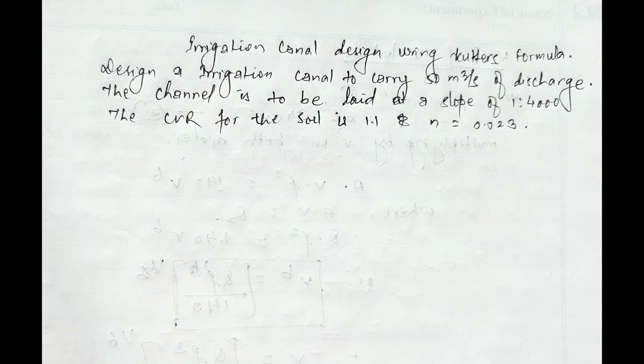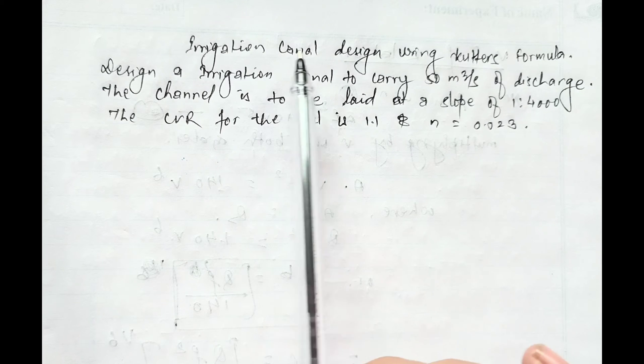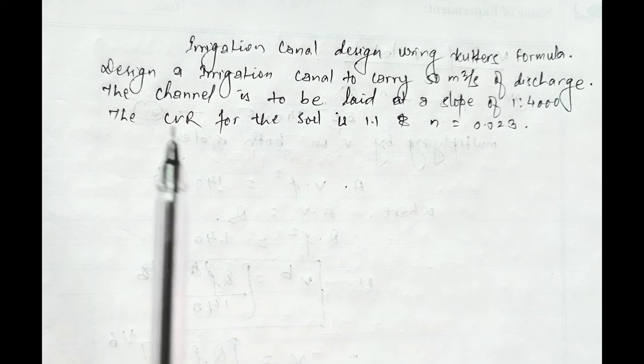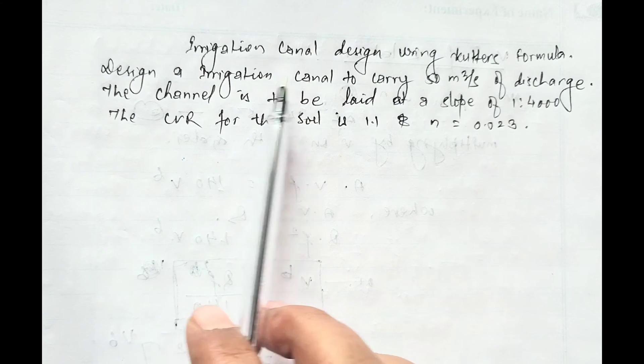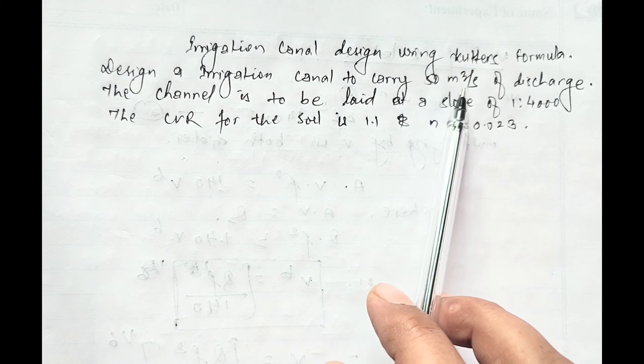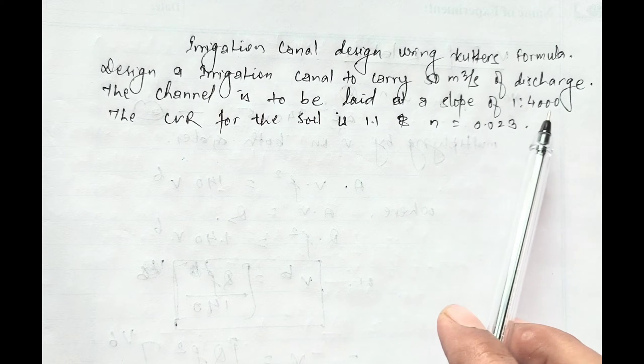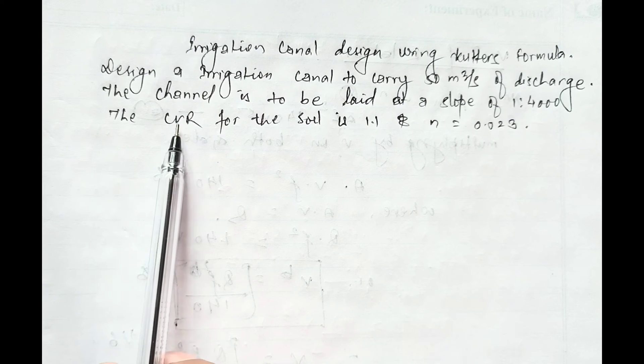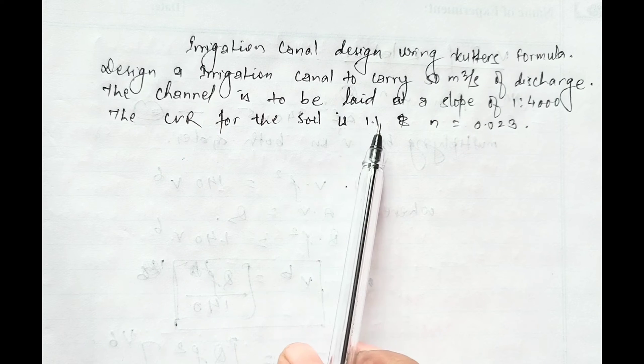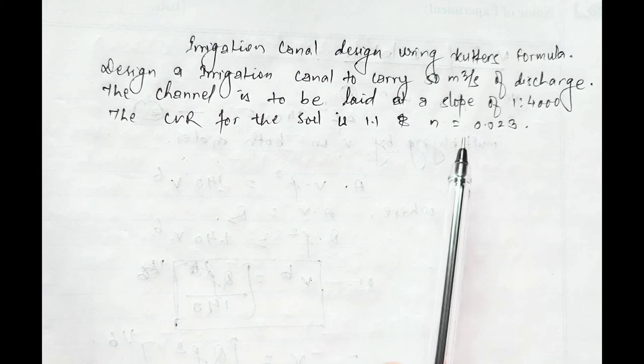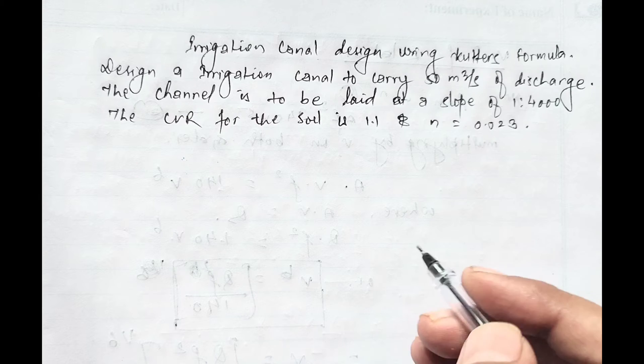Hello everyone, today we will design an irrigation canal using Kutter's formula. The given question is: design an irrigation canal to carry 50 meter cube per second of discharge. The canal is to be laid at a slope of 1 in 4000.